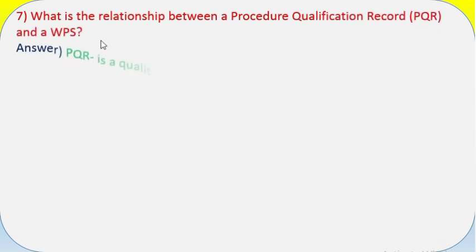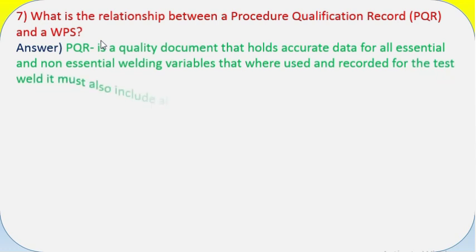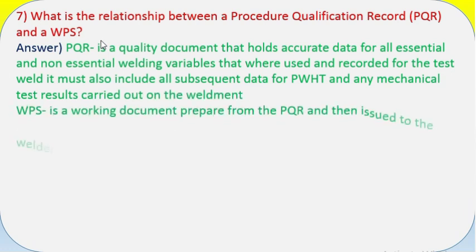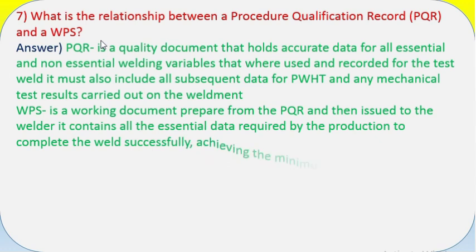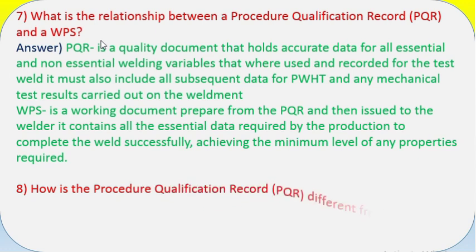Question 7: What is the relationship between a Procedure Qualification Record (PQR) and a WPS? Answer: PQR is a quality document that holds accurate data for all essential and non-essential welding variables that were used and recorded for the test weld. It must also include all subsequent data for PWHT and any mechanical test results carried out on the weldment.